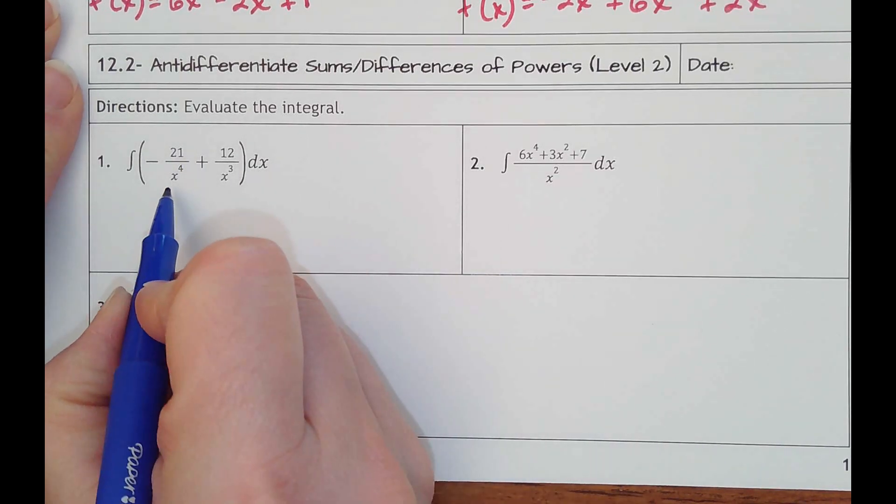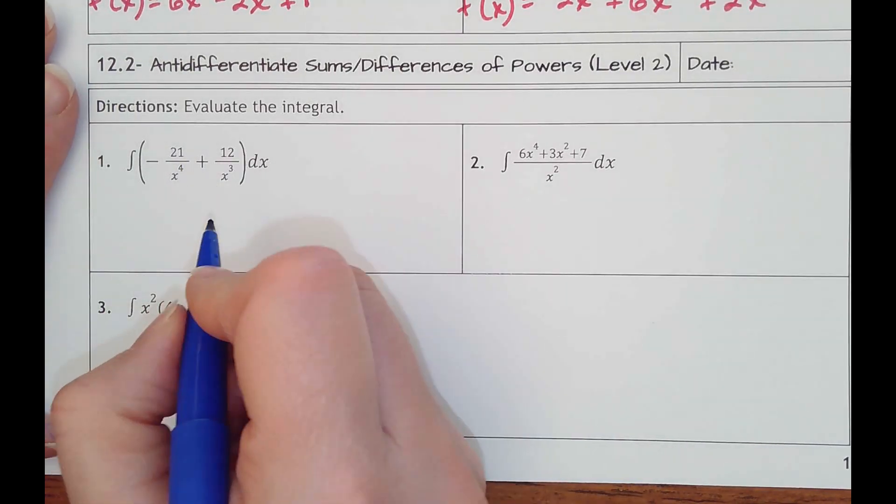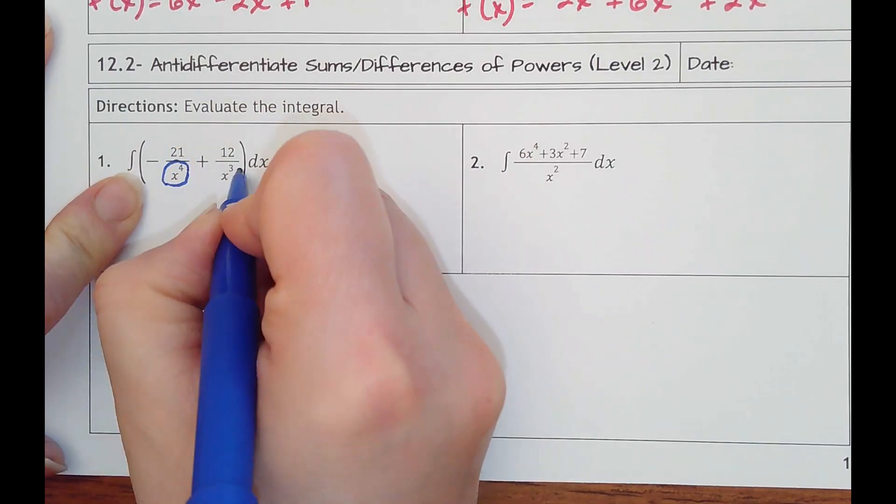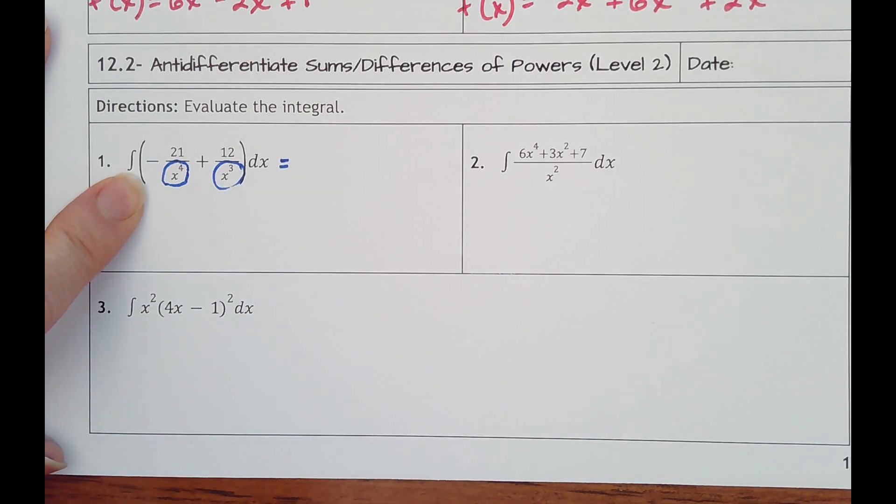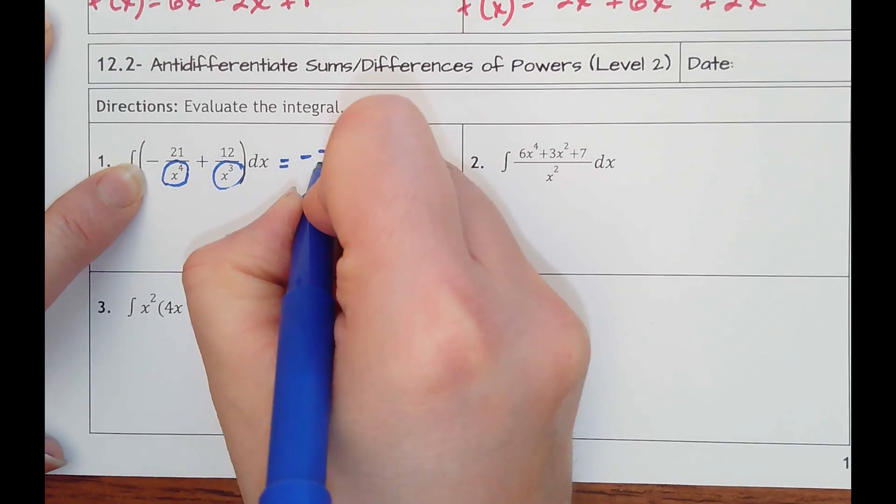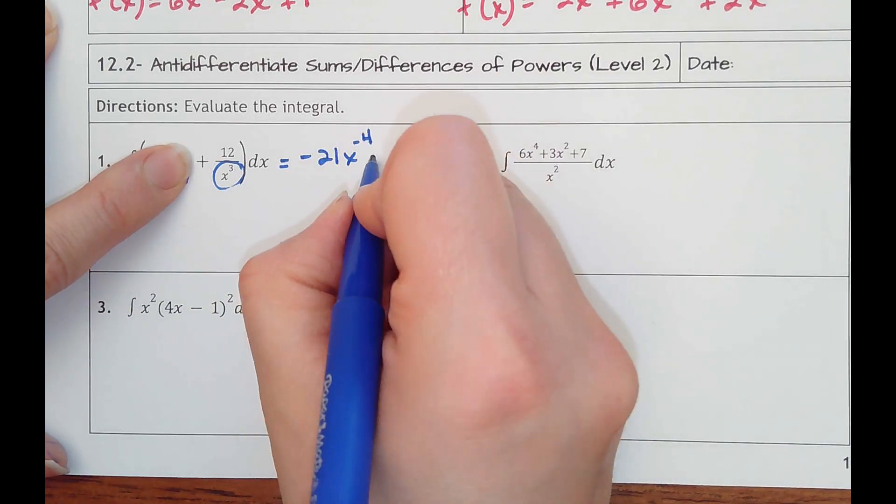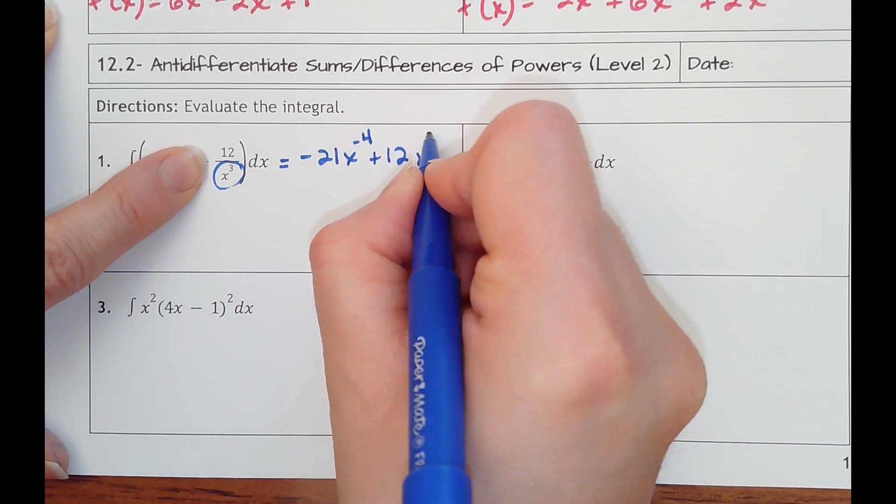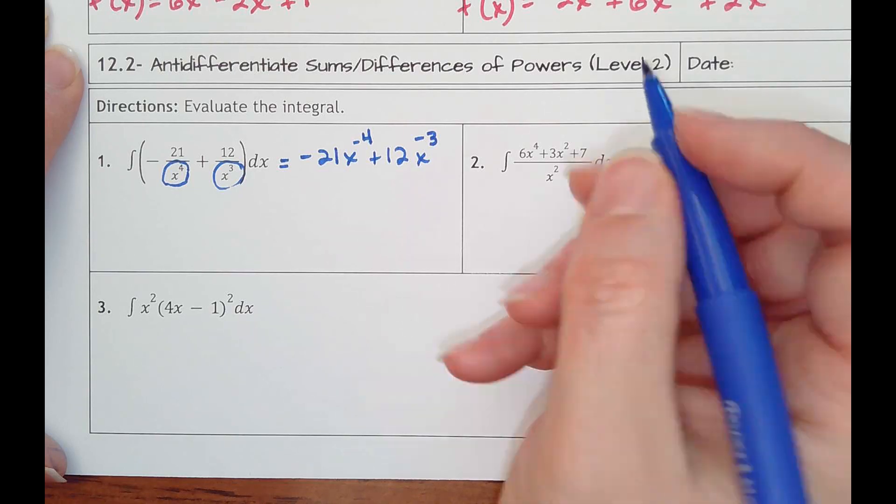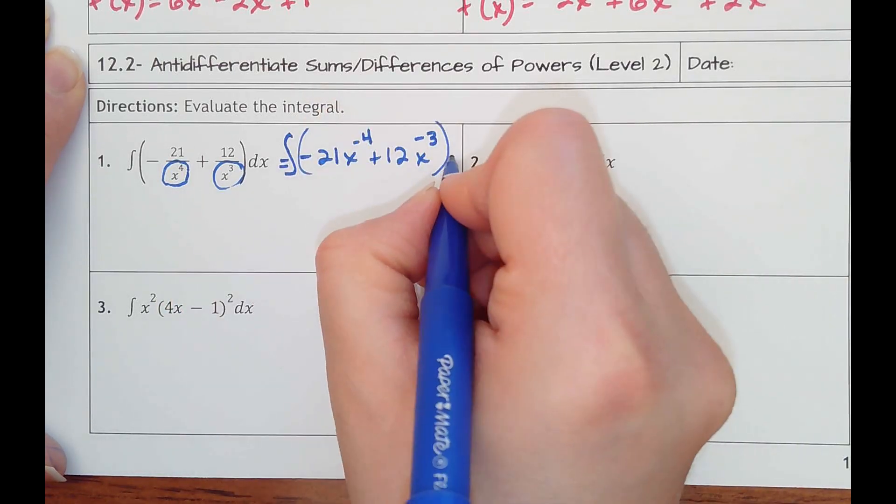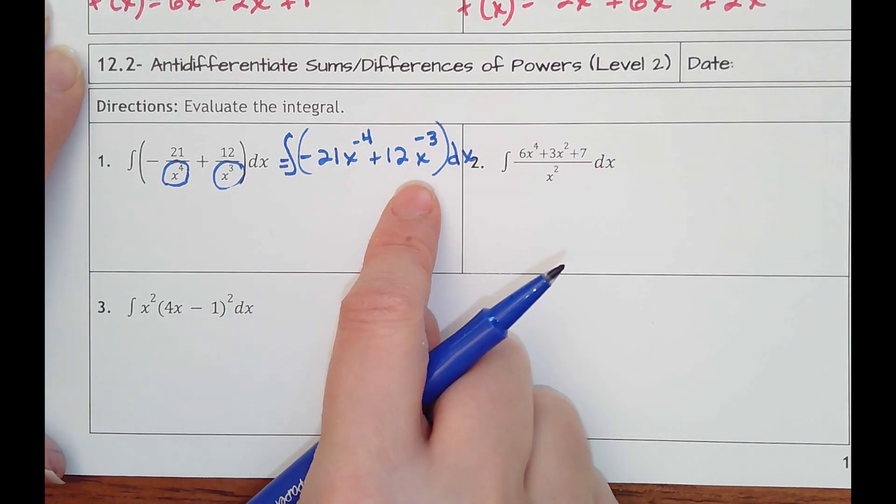So I don't want any fractions. My first job would be to float any powers from the bottom to the top. And remember, that just changes it by making the powers negative. So this would be negative 21x to the negative 4th power, plus 12x, float that 3 up to make it to the negative 3rd power. That's the function that I want to anti-derive.